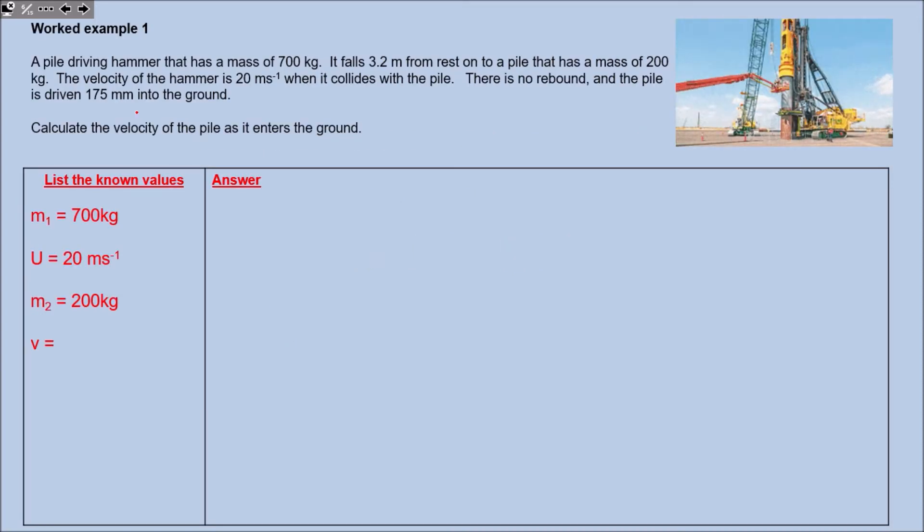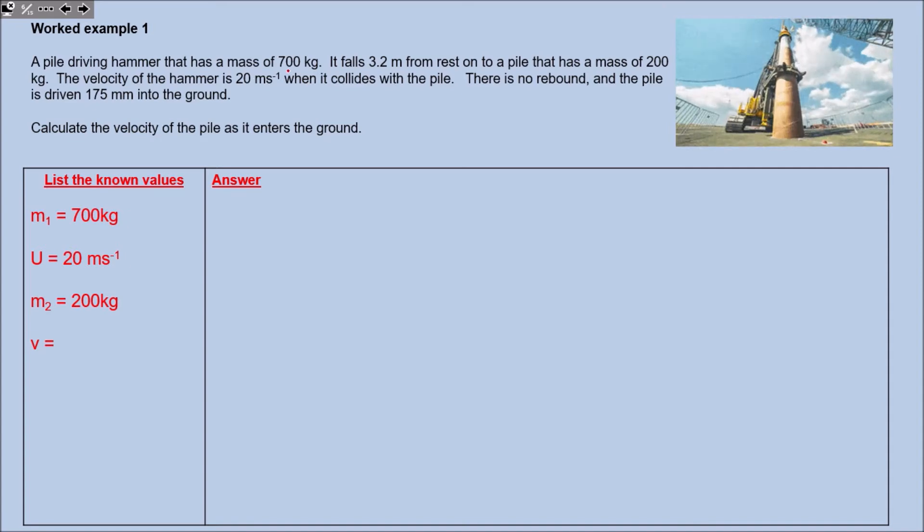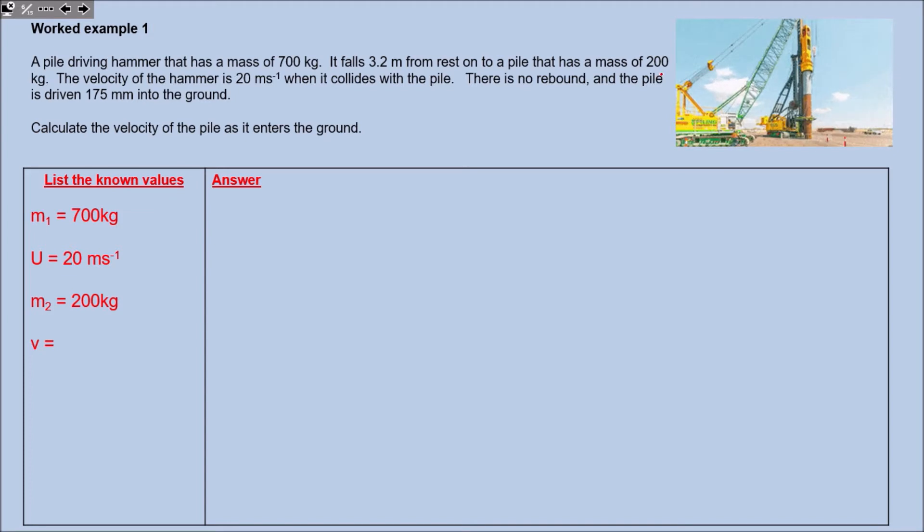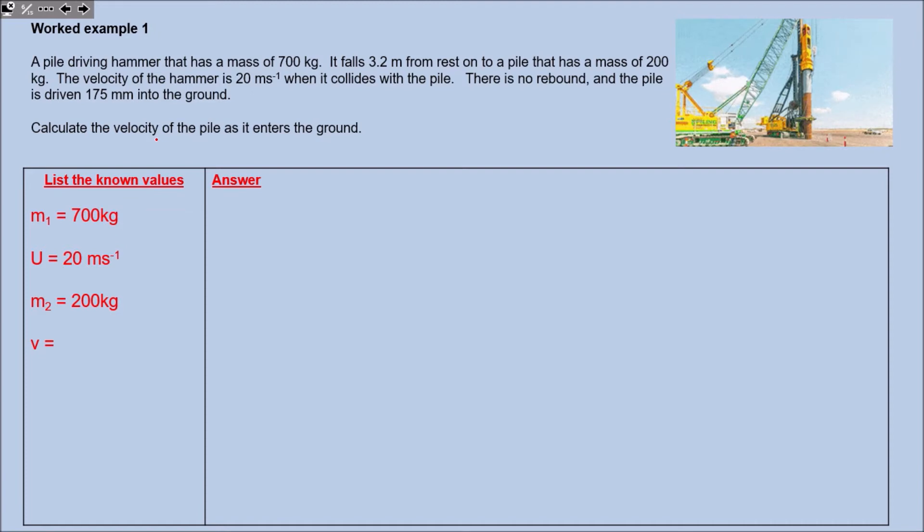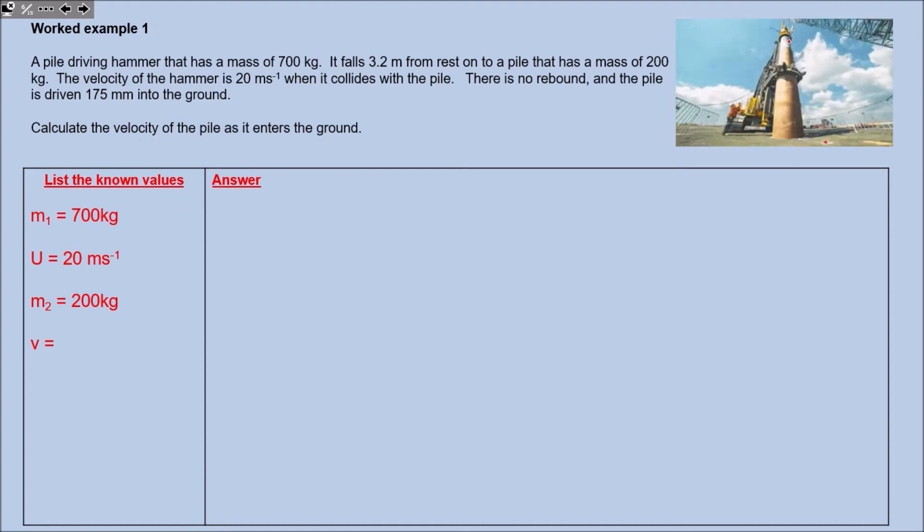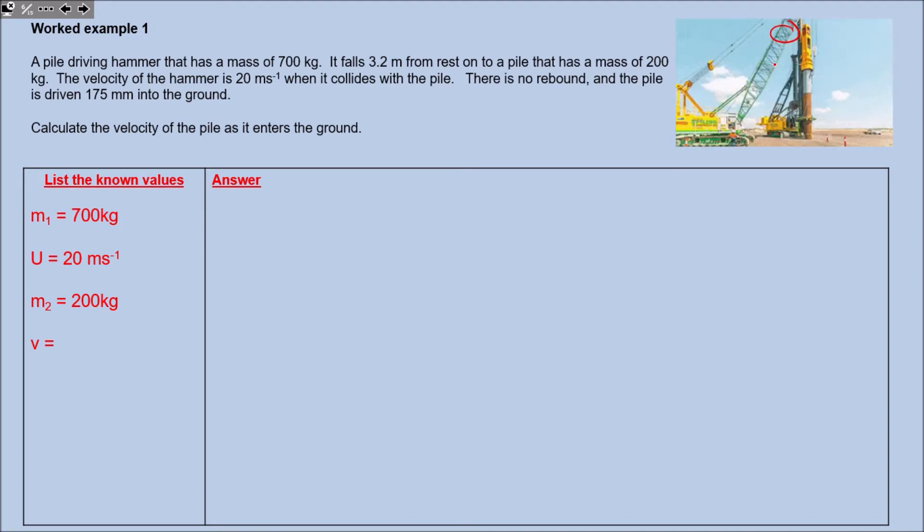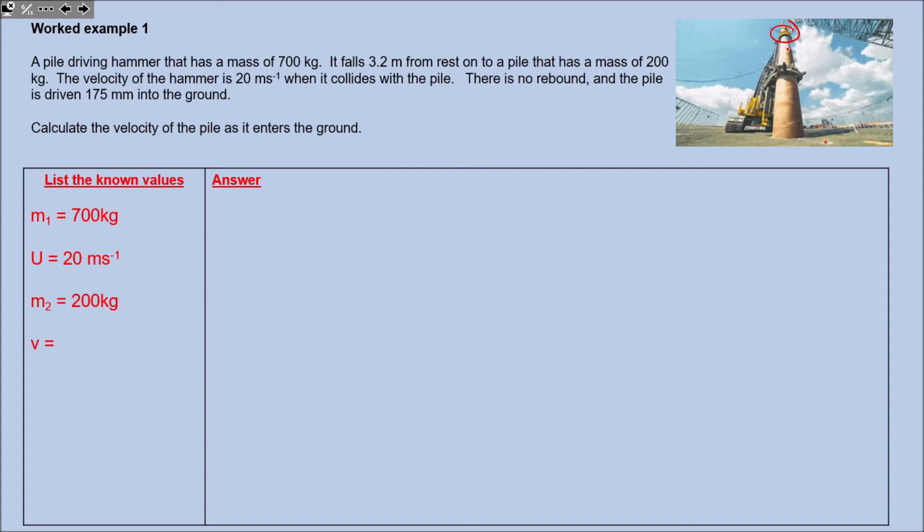I've got a pile driving hammer with a mass of 700 kilograms. It falls 3.2 meters onto a pile with mass of 200kg. The velocity of the hammer is 20 meters per second when it collides with the other object. There's no rebound. Calculate the velocity of the pile. This is a process called piling, used when putting large structures into the ground. You can see this big steel post.